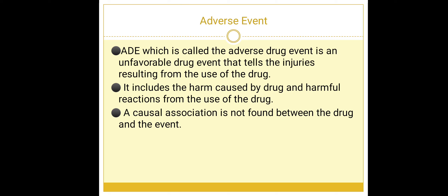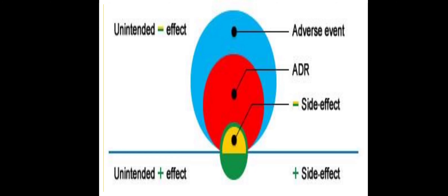You can see in the diagram: in yellow is the side effect, in red is the ADR, and in blue is the adverse event. Unintended effects encompass adverse events, ADRs, and side effects. However, unintended effects are sometimes harmful and sometimes beneficial.